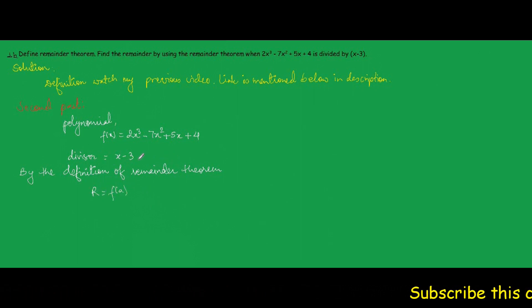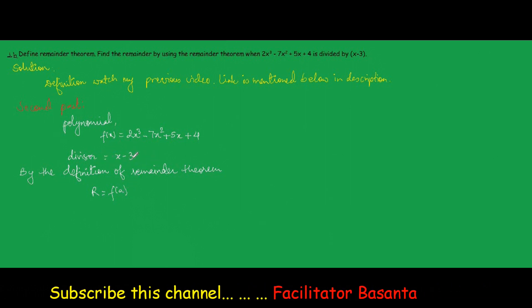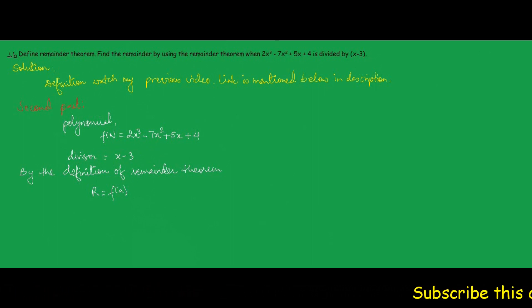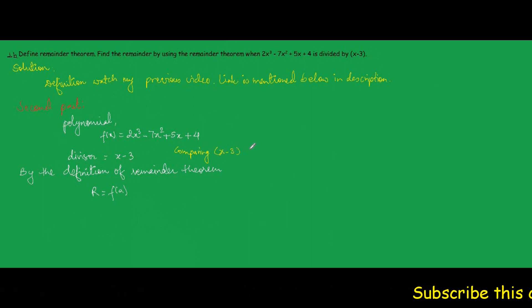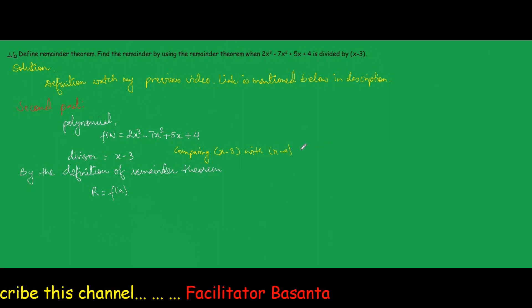It means that we need to find the value of a. For this, we compare this divisor with x - a in order to get the value of a. Comparing x - 3 with x - a, we get a = 3.